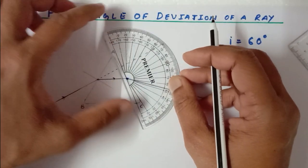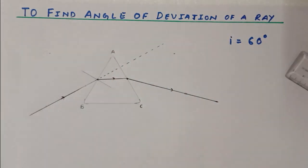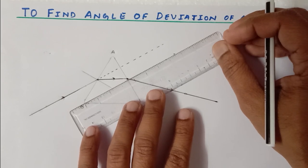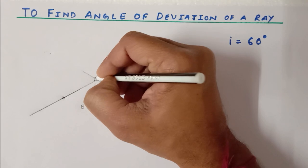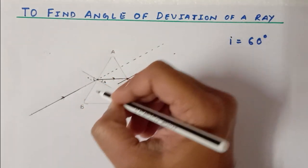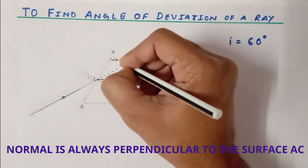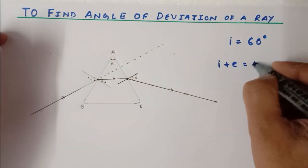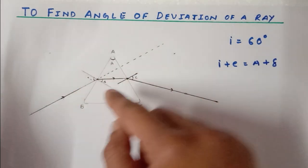I am also going to draw the normal, which is always at 90 degrees. These two points need to be joined. Now this is my angle of incidence i, this is angle of refraction r — all angles are always with respect to the normal — and this is angle of emergence. This is the angle of prism A. The relationship i plus e equals A plus delta must be followed.